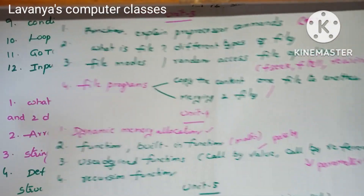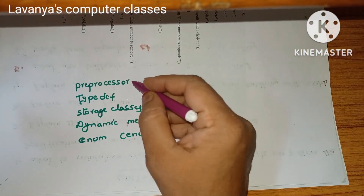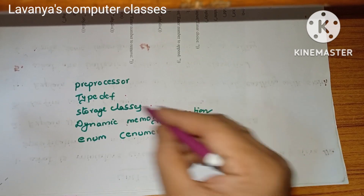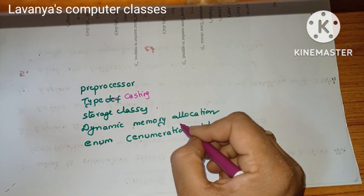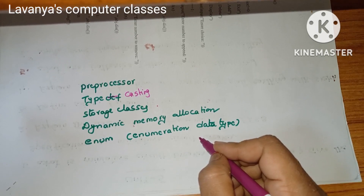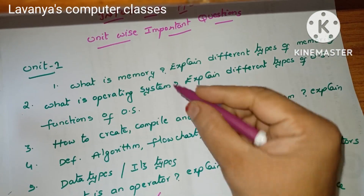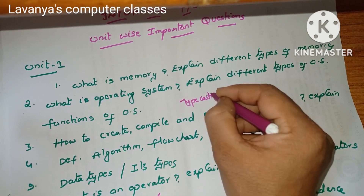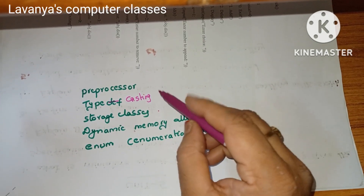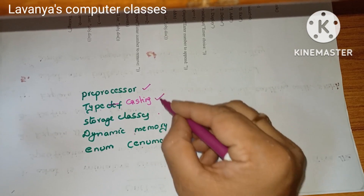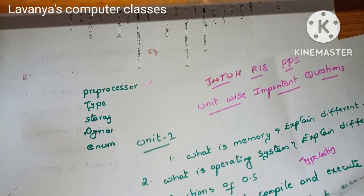These are all the important questions in PPS. Among them, the compulsory questions are: pre-processor commands, type definition, storage classes, type casting (also called type conversion), dynamic memory allocation, and enumerated data type. These are very very important, and at least 2 questions from these topics are compulsory in the examination paper.